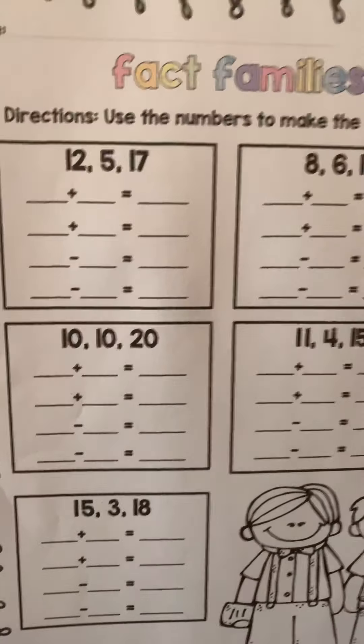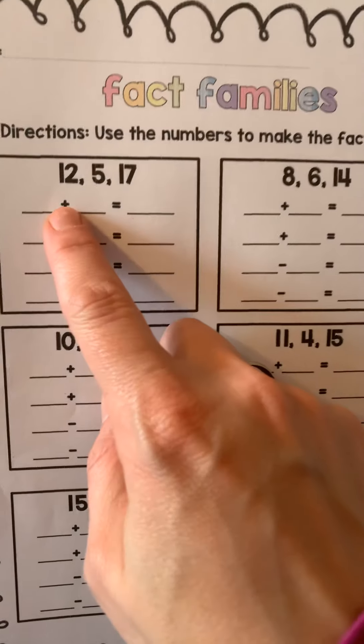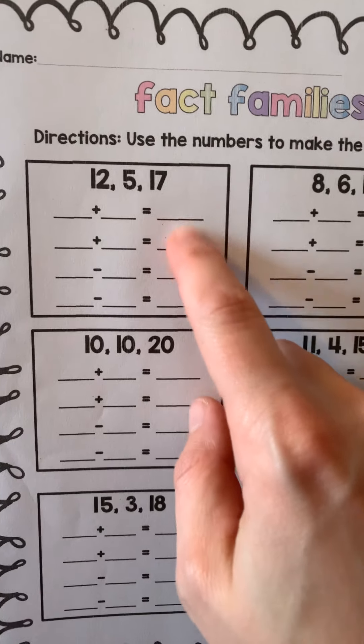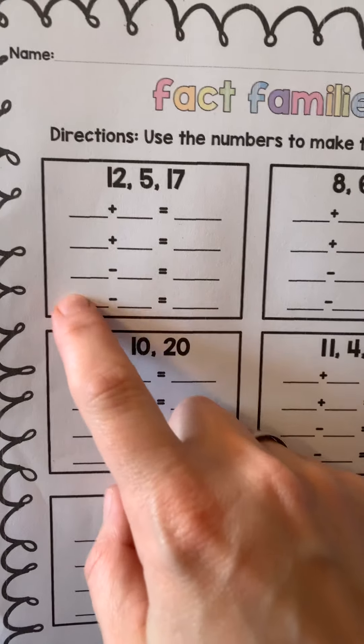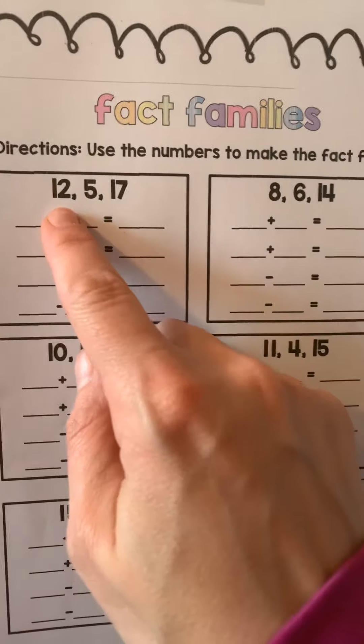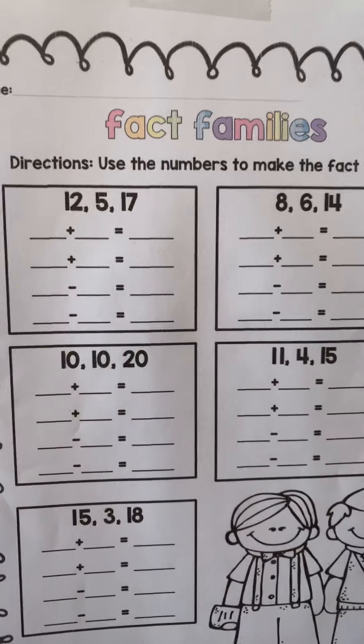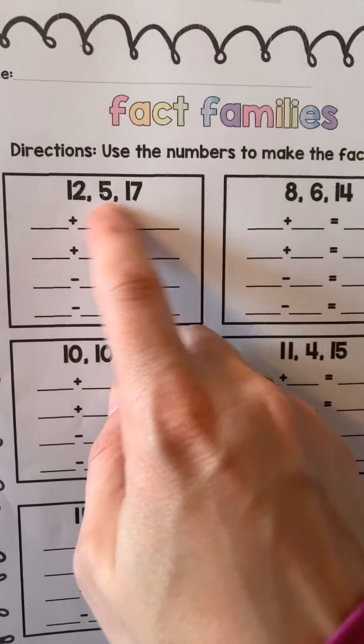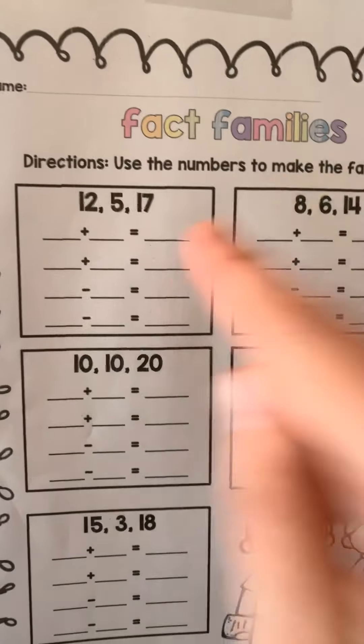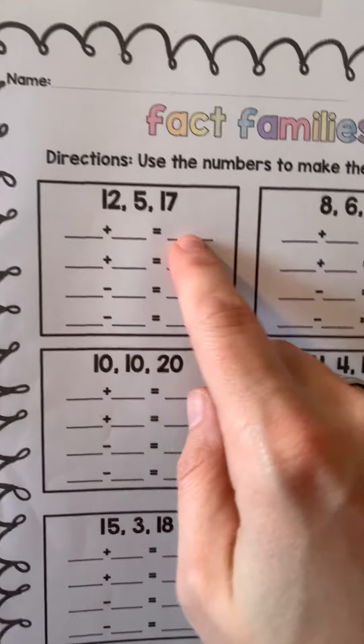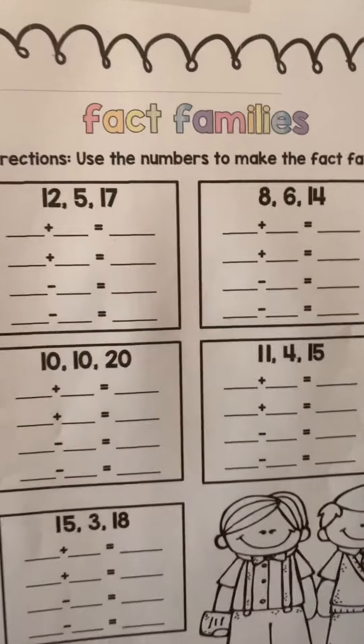Still the same thing we talked about yesterday. I know this is a review, but remember addition ends with the biggest number and subtraction starts with the biggest number. And you should be shouting out, do you let anybody else in your fact family? No. So if you see 12, 5, and 17, those are the only numbers Mrs. Masco should see in your fact family. So here we go. This should be fast.